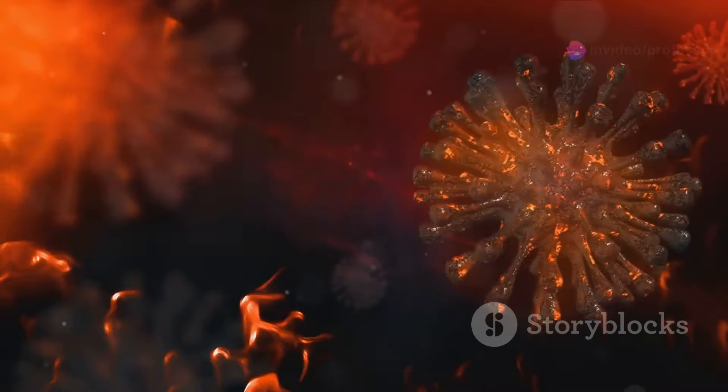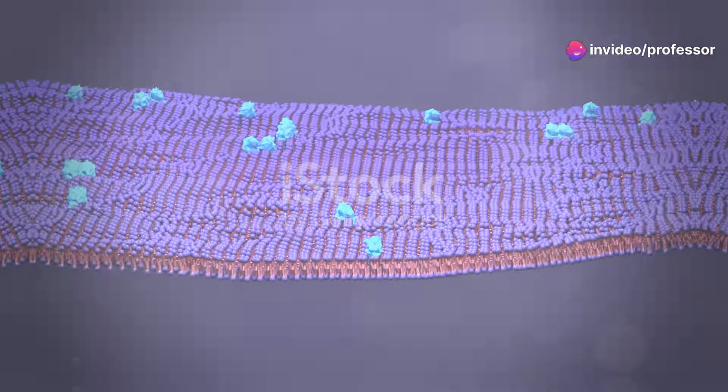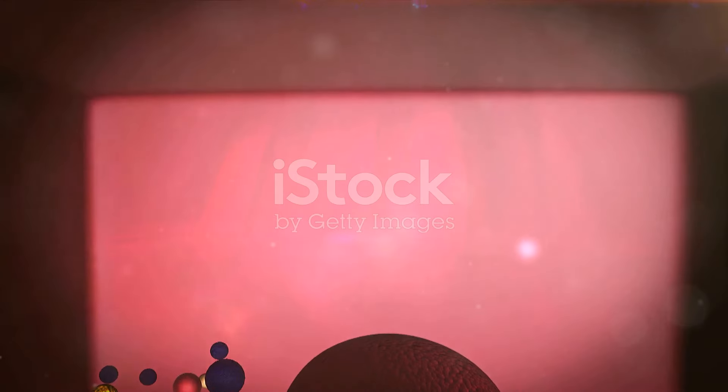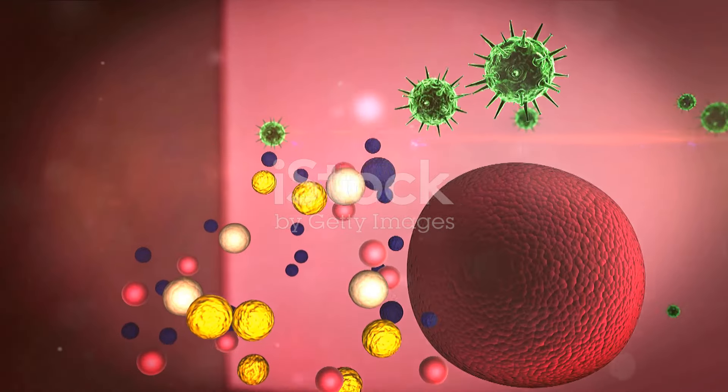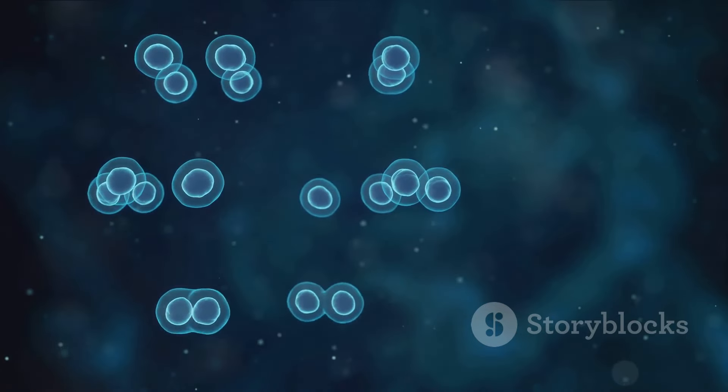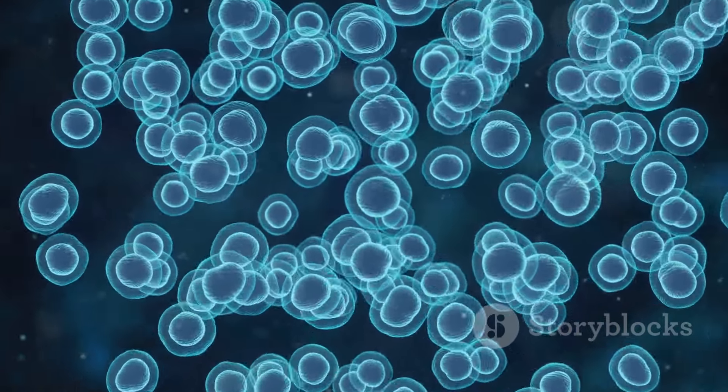As these new viruses assemble and burst out, they start the cycle all over again in new cells. So how exactly does the coronavirus wreak havoc in our bodies? It begins by attaching to ACE2 receptors, then fuses with the cell membrane to invade. Inside, it hijacks cellular machinery to replicate, spreading to new cells relentlessly. Understanding this process is crucial in developing strategies to combat the virus effectively.